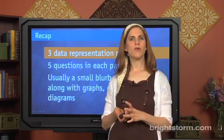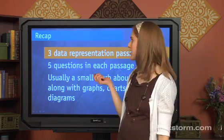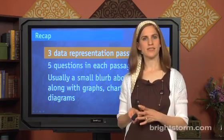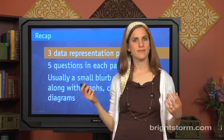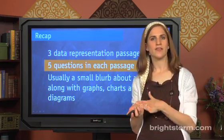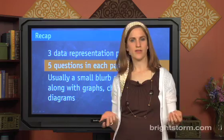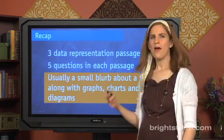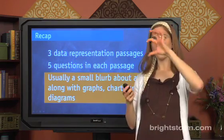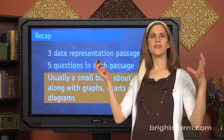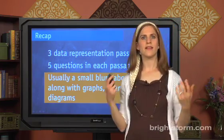Let's do a quick recap about data representation passages. You're going to see three separate data representation passages on the ACT science section. You're also going to have five questions on each of those passages for a total of 15 questions. Data rep passages are a little blurb and then usually a big chart or graph, and then the five questions will be about what's on that chart or graph.